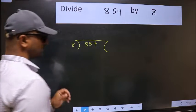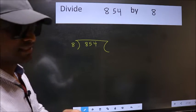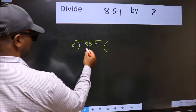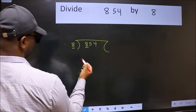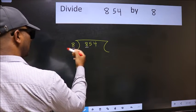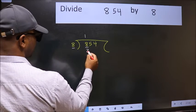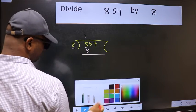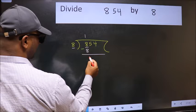This is your step 1. Next, here we have 8 and here 8. When do we get 8 in the 8 table? 8 once is 8. Now we should subtract. We get 0.